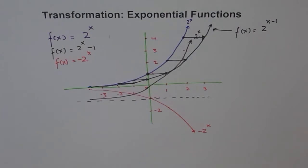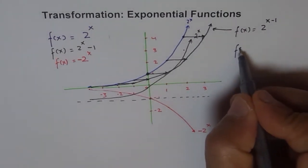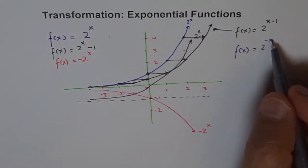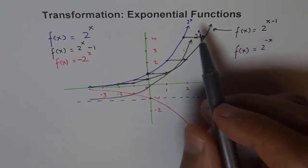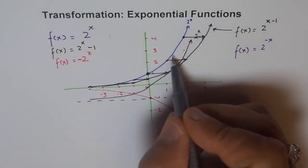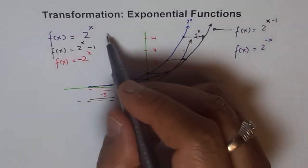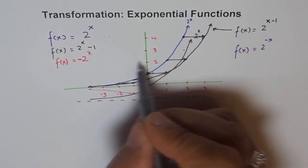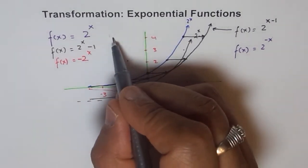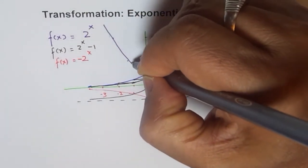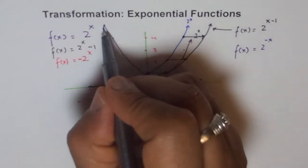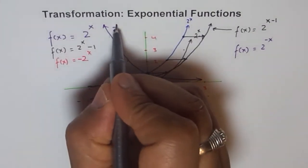Now for f(x) = 2^(-x): the minus x means reflection on the y-axis. Our original graph is always increasing, so when you apply the negative it becomes always decreasing — it gets reflected on the y-axis. The point on the y-axis is invariant and remains in place, while other points reflect across it. So we get a decreasing graph for 2^(-x).